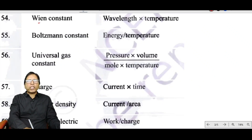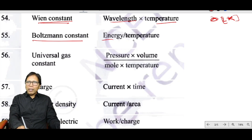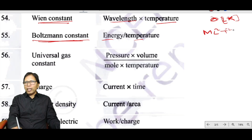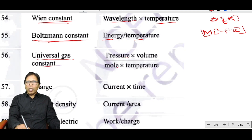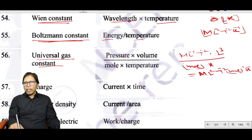Wien's constant has the dimension of wavelength × temperature: L × K. The universal gas constant equals pressure × volume divided by (moles × temperature): ML⁻¹T⁻² × L³ ÷ (mol × K) = ML²T⁻²mol⁻¹K⁻¹.